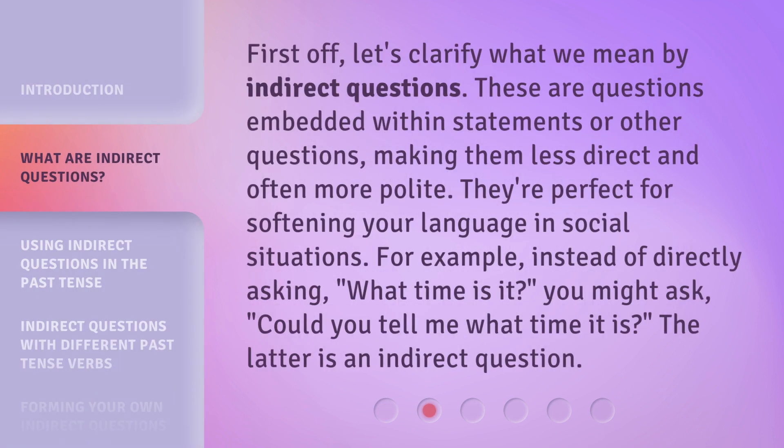First off, let's clarify what we mean by indirect questions. These are questions embedded within statements or other questions, making them less direct and often more polite. They're perfect for softening your language in social situations. For example, instead of directly asking, "What time is it?" you might ask, "Could you tell me what time it is?" The latter is an indirect question.